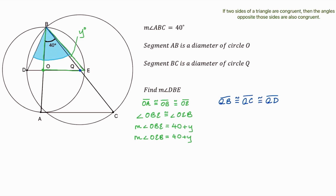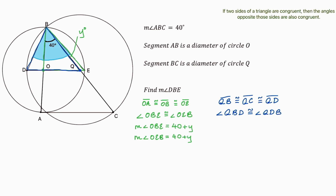Once again, look what we have. We have triangle QBD where two of its sides — specifically QB and QD — are congruent. Let's use our theorem once again. The two congruent sides are QB and QD, which means the angles opposite them must be congruent. So angle QBD is congruent to angle QDB.